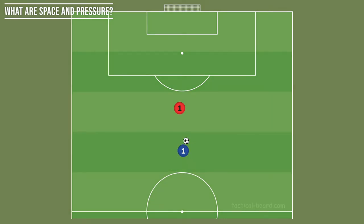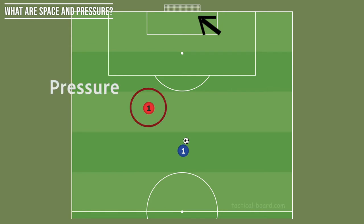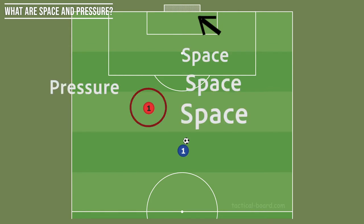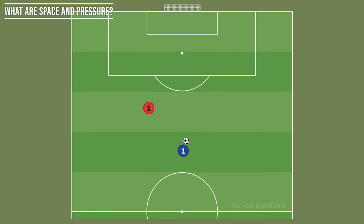Imagine these two players playing against each other 1v1 and we were to move the red team player here. We can probably guess what path the blue team player would take to get to goal, right? Where's the goal? Where's the pressure? And where's the space? The blue team player is going to almost certainly prefer to dribble through space rather than dribble into pressure.